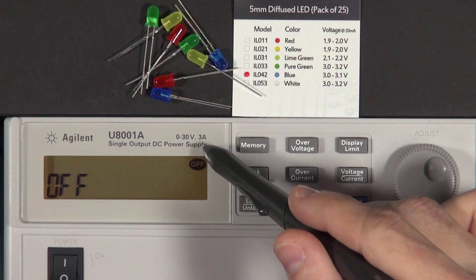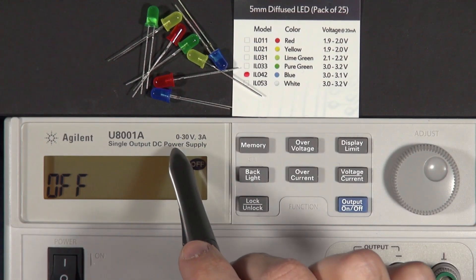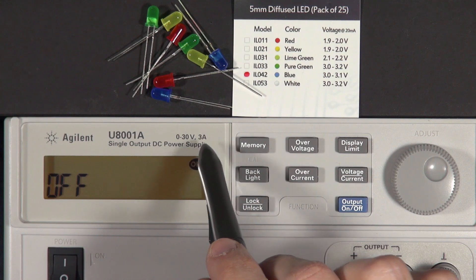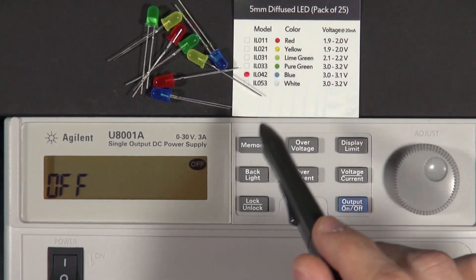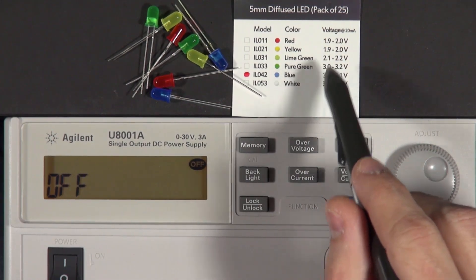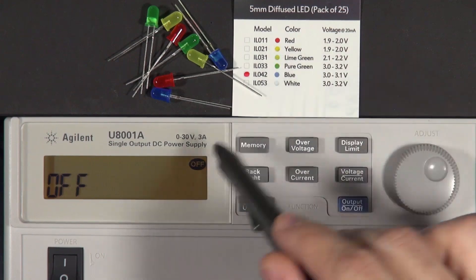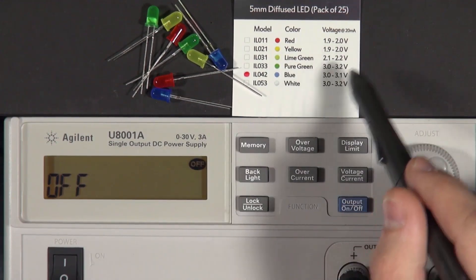So I have a power supply here that we can use that I can adjust. And it'll give us between 0 and 30 volts at 3 amps. And of course, 3 amps is a whole lot more than 20 milliamps. But if we give the LED the voltage it wants, it should only draw 20 milliamps. So if we give it the correct voltage, it should draw the appropriate amount of current.